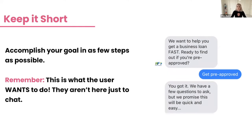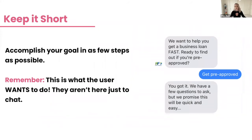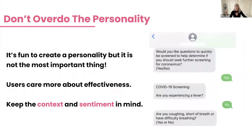Number two: keep it short. Make sure a user accomplishes their goal in as few steps as possible. Don't ask 30 questions because they won't make it to the end. Aim for about 10 questions max — as soon as you go past 10, unless they really want what you're offering, you're asking too much. Think about what you could offload and ask at a different time. The user wants to get in, get out, and get whatever they want.